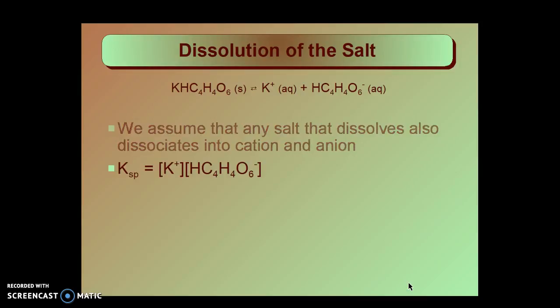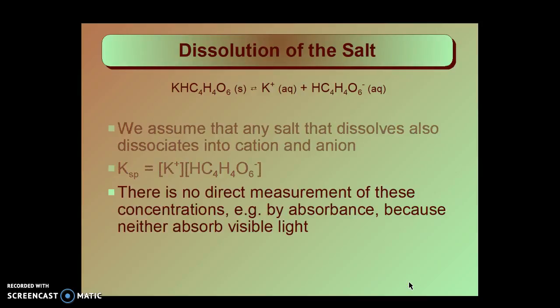This is the solubility product expression for KHT. The potassium ion times the hydrogen tartrate ion concentrations. Now there is no way to directly measure these concentrations for instance by absorbance of light because neither of these ions is such that it will absorb visible light. So that's not an easy way to get to it directly.